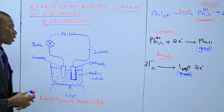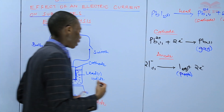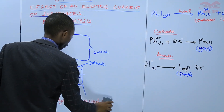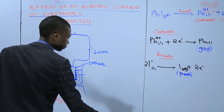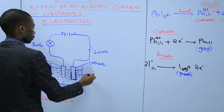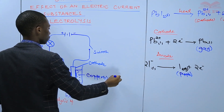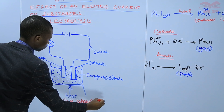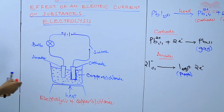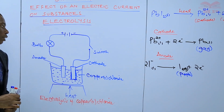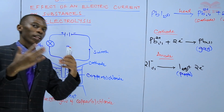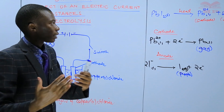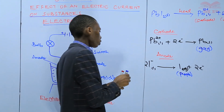If we did the electrolysis of copper(II) chloride — when you heat copper(II) chloride, you are going to form a liquid of copper(II) chloride because all the electrostatic forces of attraction have been weakened and the ions are now free. Therefore, when you heat, this is what you are going to observe.